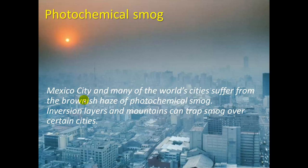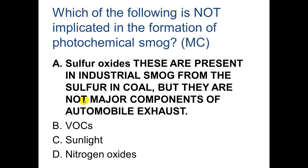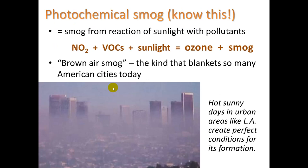Now let's compare industrial smog with photochemical smog. Mexico City and many of the world's cities suffer from the brownish haze of photochemical smog. Inversion layers in mountains can trap smog over certain cities, including LA. Sulfur oxide is the only pollutant not implicated in photochemical smog formation. VOCs plus nitrogen oxides plus sunlight makes photochemical smog, which includes tropospheric ozone. The NOx gives photochemical smog its brownish color — we call this brown air smog. Hot, sunny days in urban areas like LA create perfect conditions for its formation.